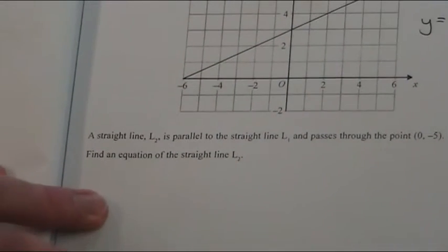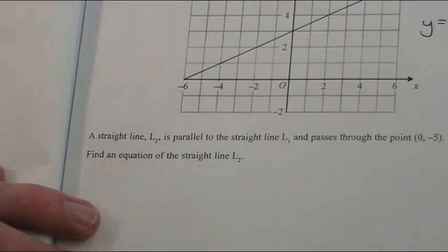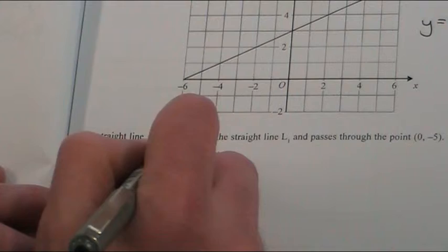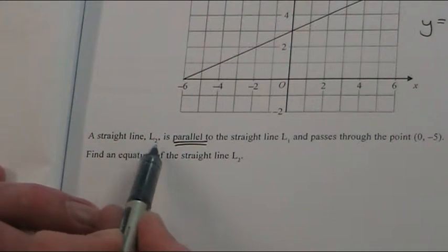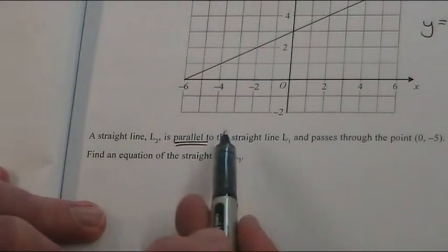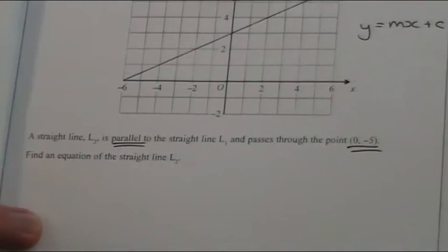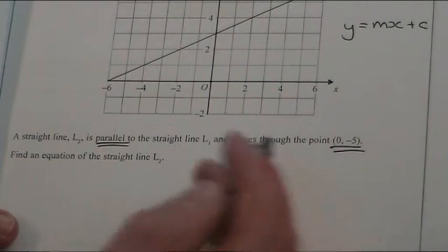Now let's read the words. A line, so they're calling this one line 1, so line 2 is parallel. So that can look quite confusing, but it's just saying another line is parallel to this line. And it passes through 0 minus 5. Write the equation of the line.